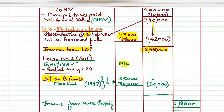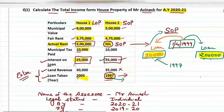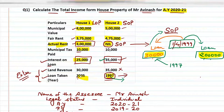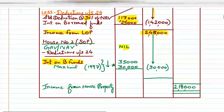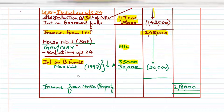GAV and NAV are always nil for SOP because we live in our own house and would never pay rent to ourselves. Less deduction under section 24 — interest on borrowed funds is ₹35,000, and the loan was taken in 1997. Since the loan was taken before April 1, 1999, the maximum limit is ₹30,000. So we write ₹30,000 here, not ₹35,000.